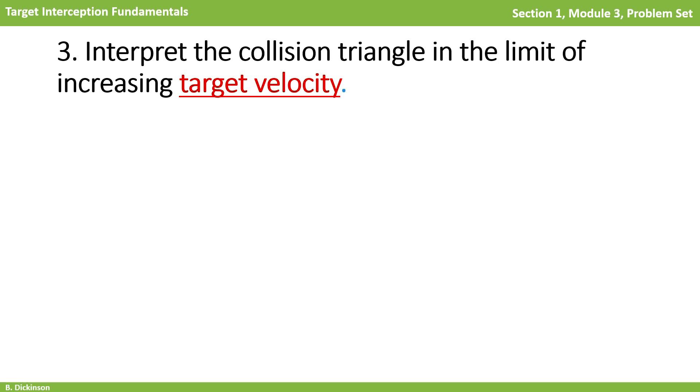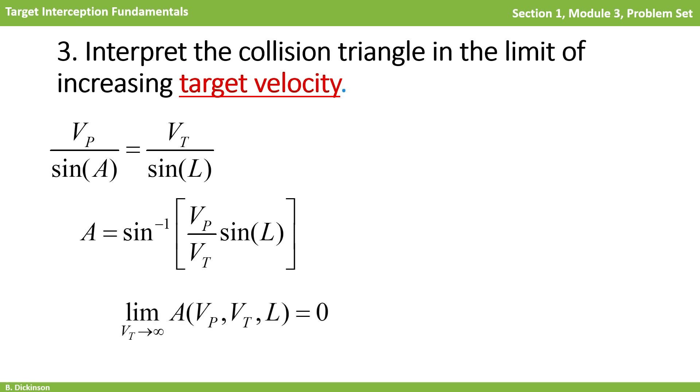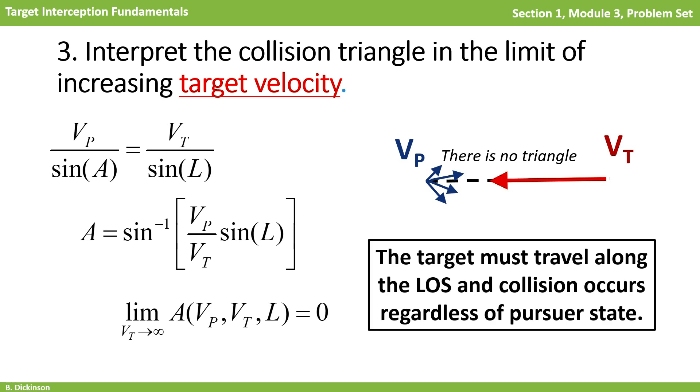For the case of increasing target velocity, we again start with the law of sines. Solving for heading angle puts the velocity of the target on the denominator, so that taking the limit as Vt goes to infinity, we find that the heading angle goes to zero. Therefore, in the case of increasing target velocity, regardless of the pursuer state or action, collision occurs. Again, the collision triangle has collapsed and the engagement is only along the line of sight.